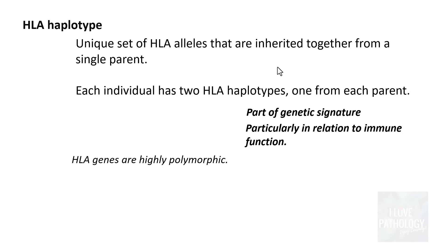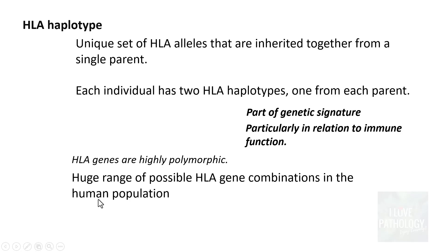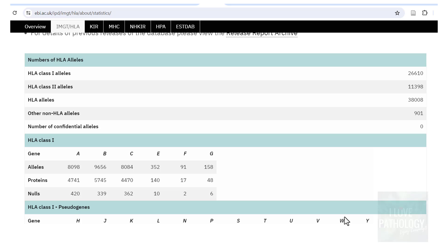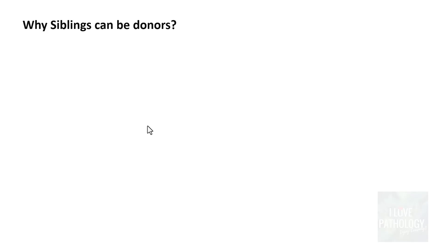HLA genes are highly polymorphic, which is why there can be a huge range of possible HLA gene combinations in the human population. There is a database called the International Immunogenetics Information System, or HLA database, which lists around 38,000 different types of HLA alleles. Given this enormous diversity and the importance of HLA in immune rejection, for a transplant to have no rejection both donor and recipient must have similar HLA — which is nearly impossible except in the case of identical twins.